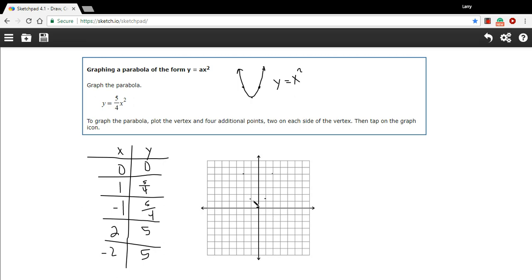So there's our four points. So we can sketch in our arms of our parabola. Hopefully, you can sketch it in a little less squiggly than I did there. And that is how you go about graphing a parabola in this form of y equals ax squared.